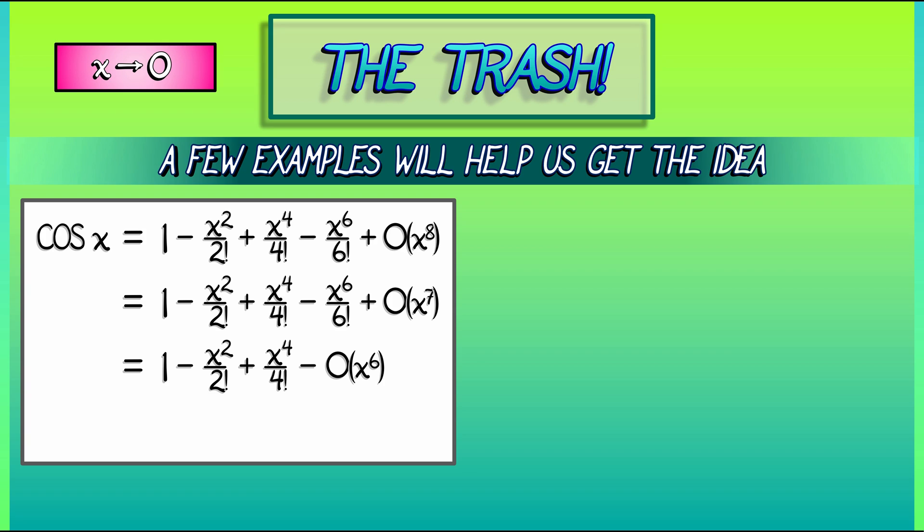Now, what about that minus sign? Do we need that? Could we make it a plus sign? Yeah, it doesn't matter. In fact, if we just want the leading order term, we can say that cosine of x in the limit as x goes to 0 is really just 1 plus some other stuff. And that other stuff is in big O of x squared. That means that all those other terms are of order x squared and higher.